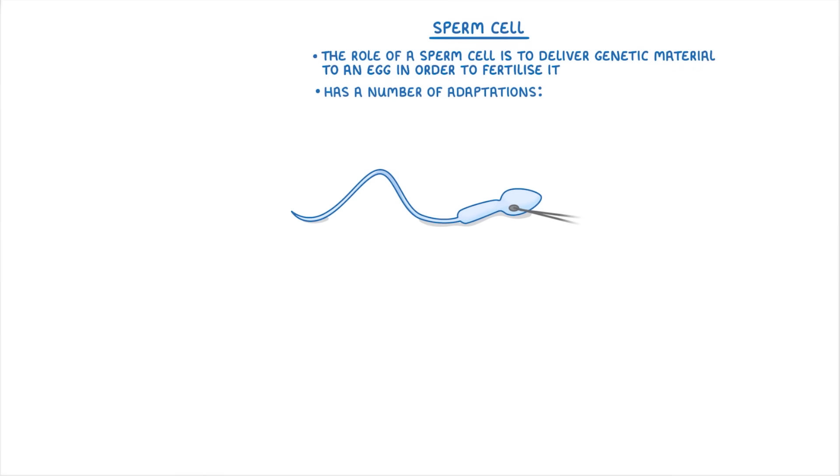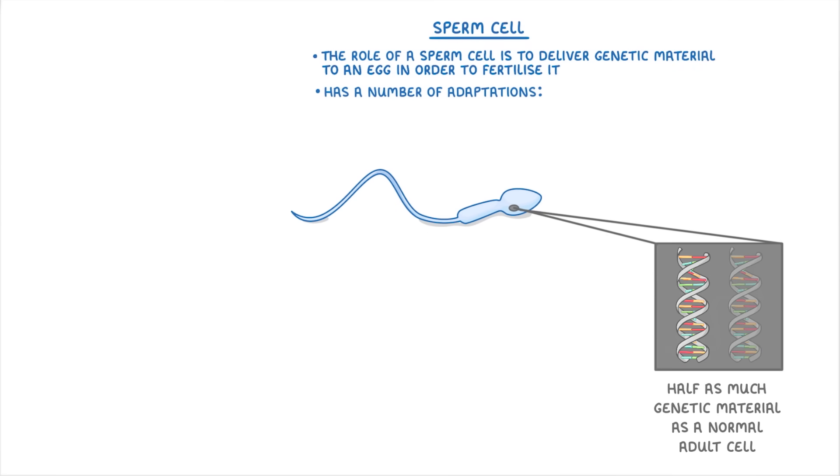For example, in its nucleus, a sperm cell only has half as much genetic material as a normal adult cell, which is important because it has to combine with the egg's genetic material to form a normal cell's worth. Another adaptation is the flagellum on the end, which acts like a tail and allows a sperm cell to swim through the uterus and fallopian tube to reach the egg.